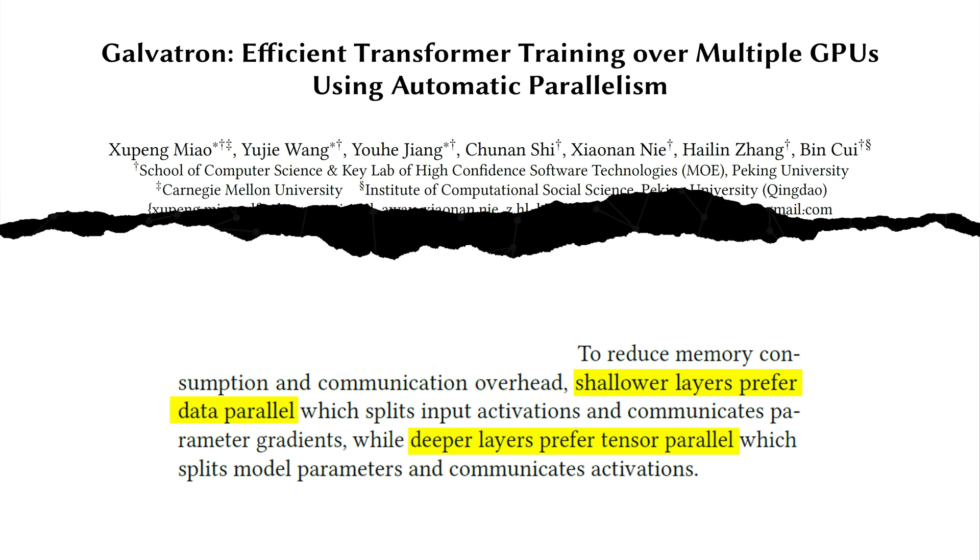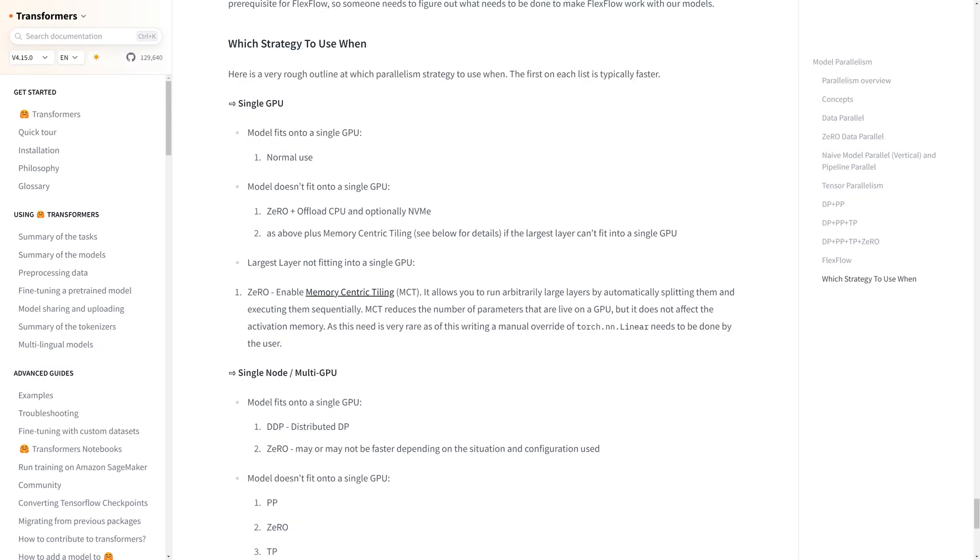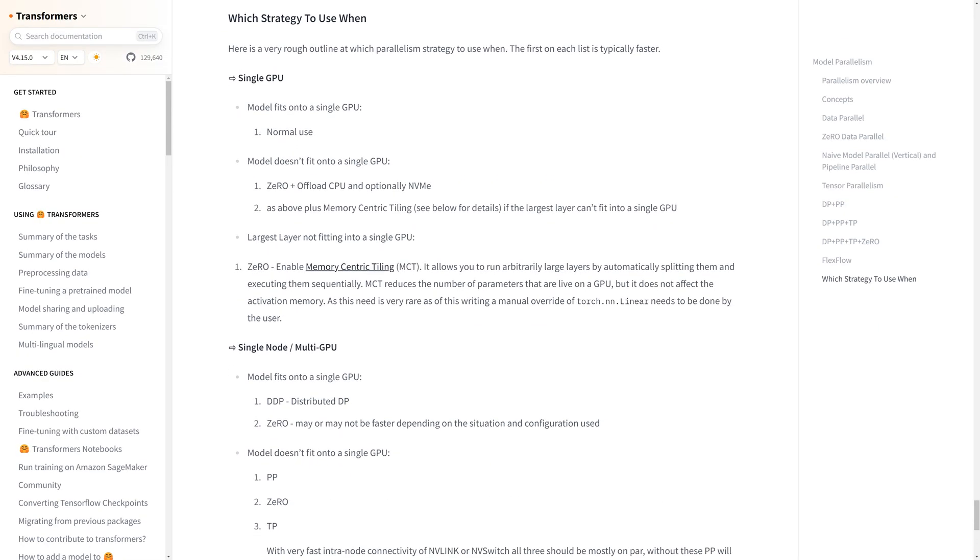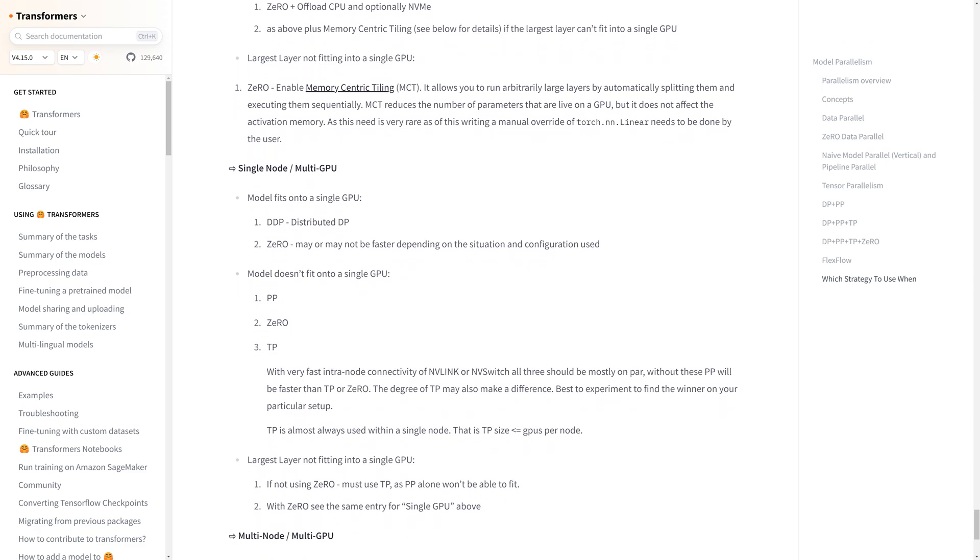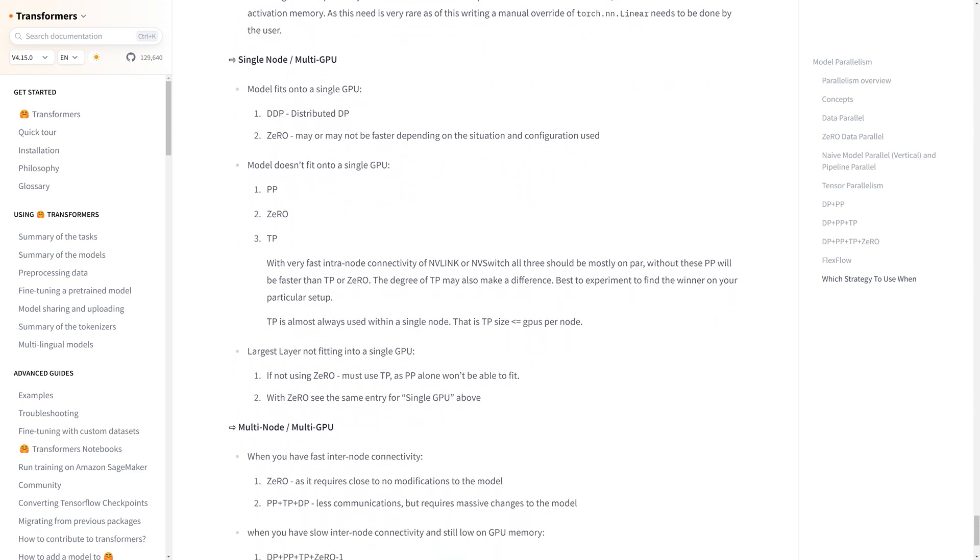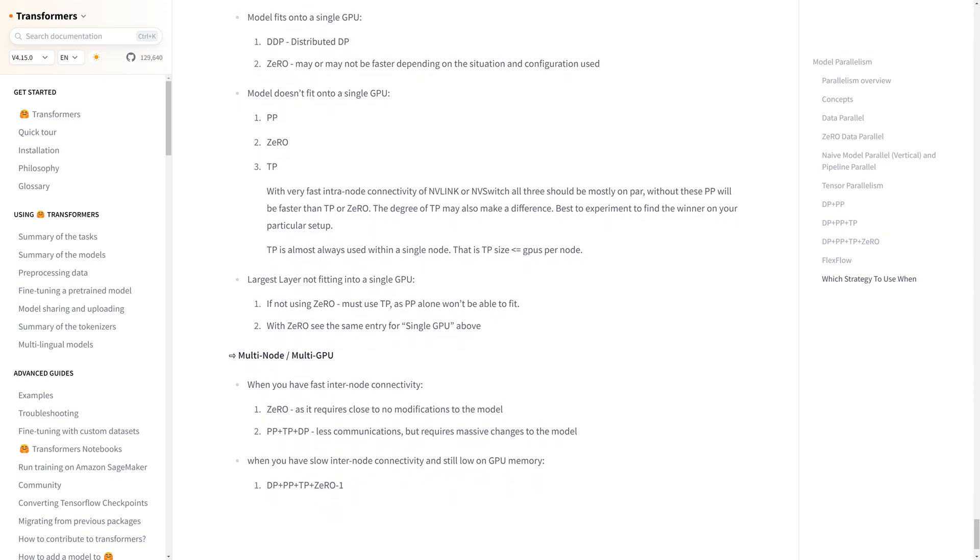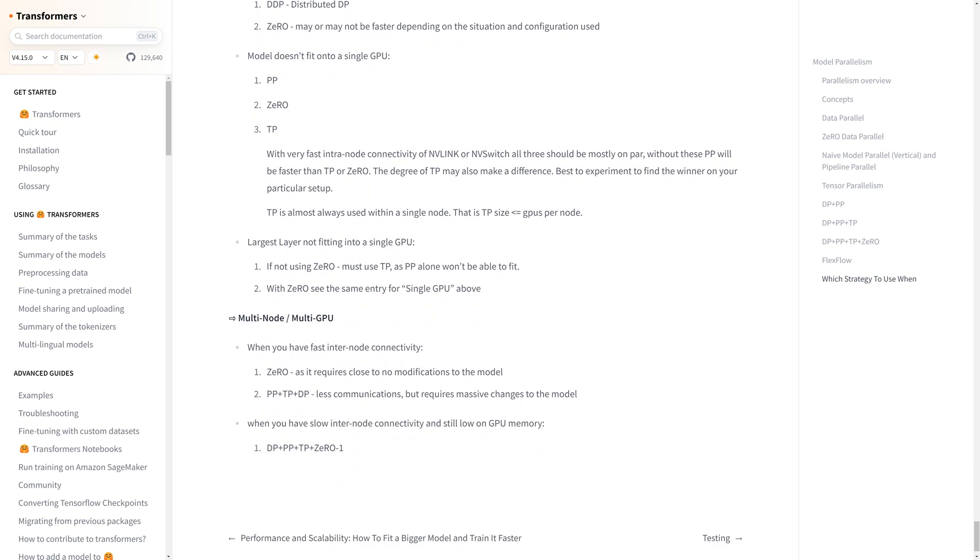Another piece of insight the paper finds is that DP is preferred when the model parameters are small, because then we can afford to transfer the model parameters. When the model parameters are large, however, TP is preferred because then we can split the model parameters across GPUs within a single cluster. This article from Hugging Face has a neat summary at the bottom that outlines when to use what strategy. Check it out if you're interested. Also, as you read more resources on these topics, you'll oftentimes find model parallelism as an umbrella term for both tensor parallelism and pipeline parallelism, so be sure to keep that in mind.